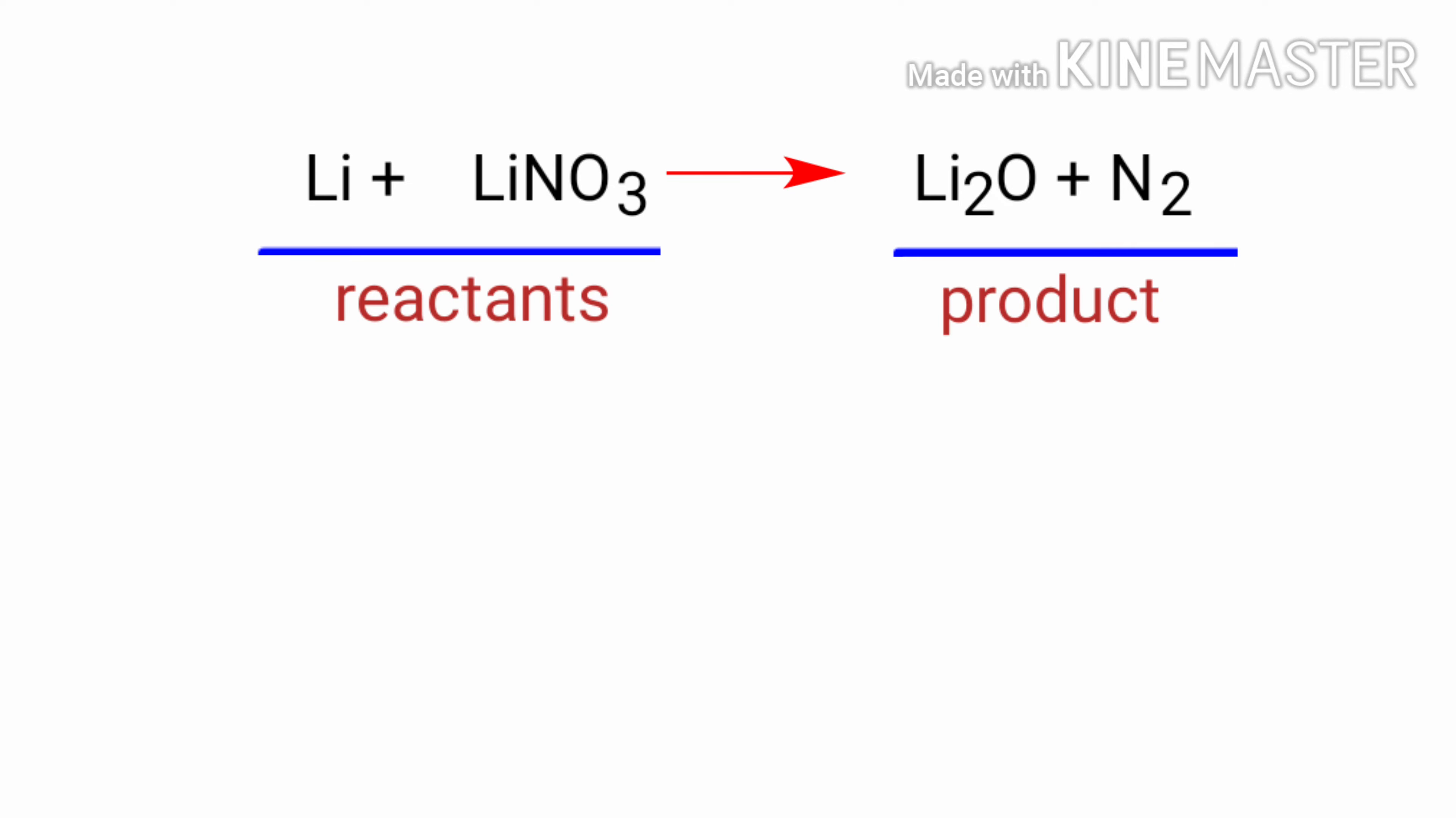In this equation, the reactants are Lithium and Lithium Nitrate and the products are Lithium Oxide and Nitrogen. If you look at this equation, the equation is not balanced.